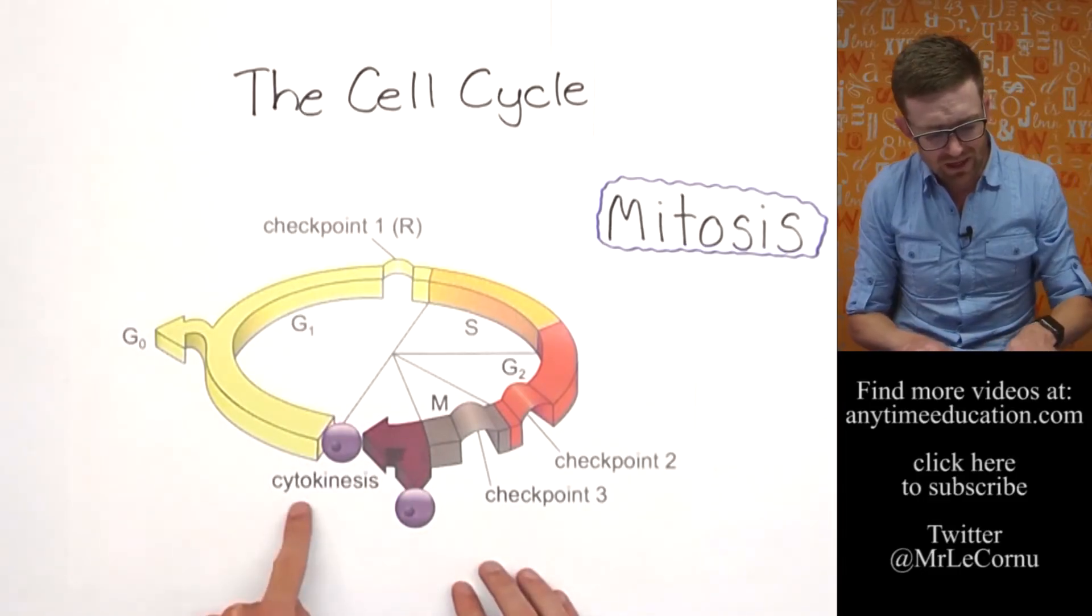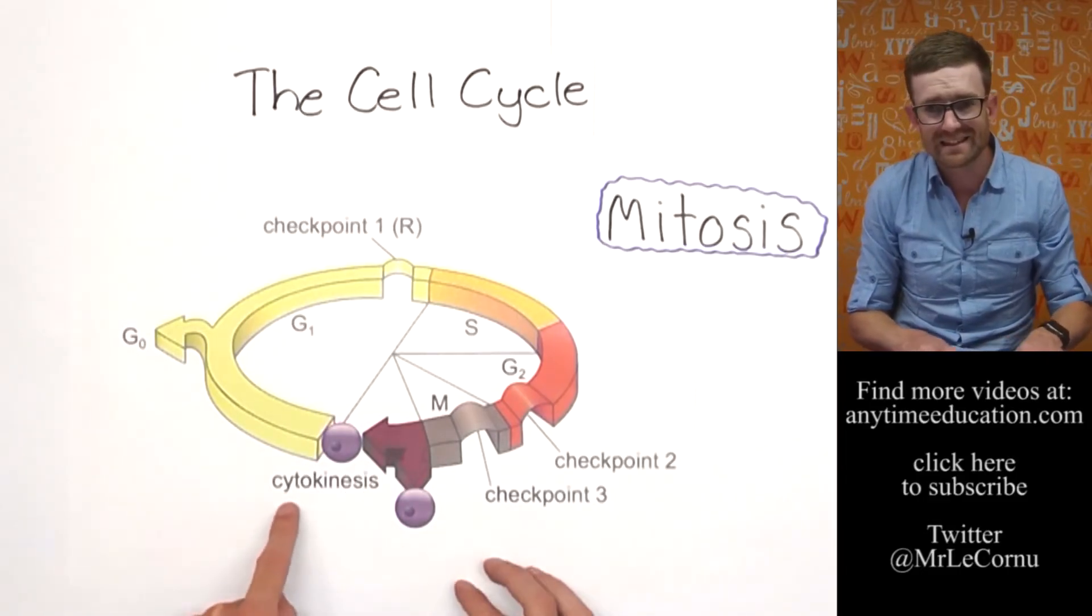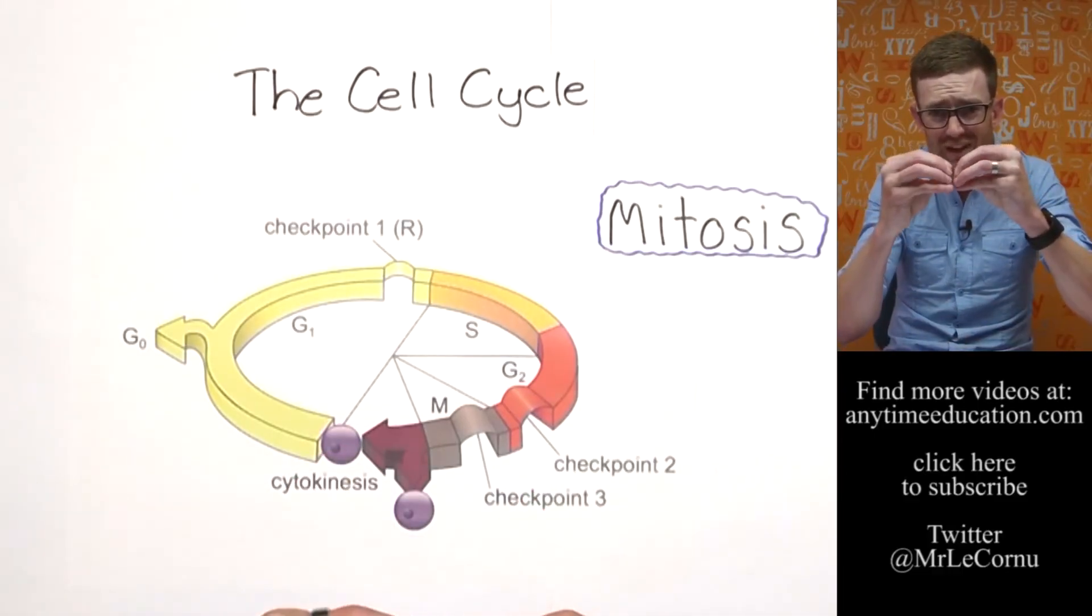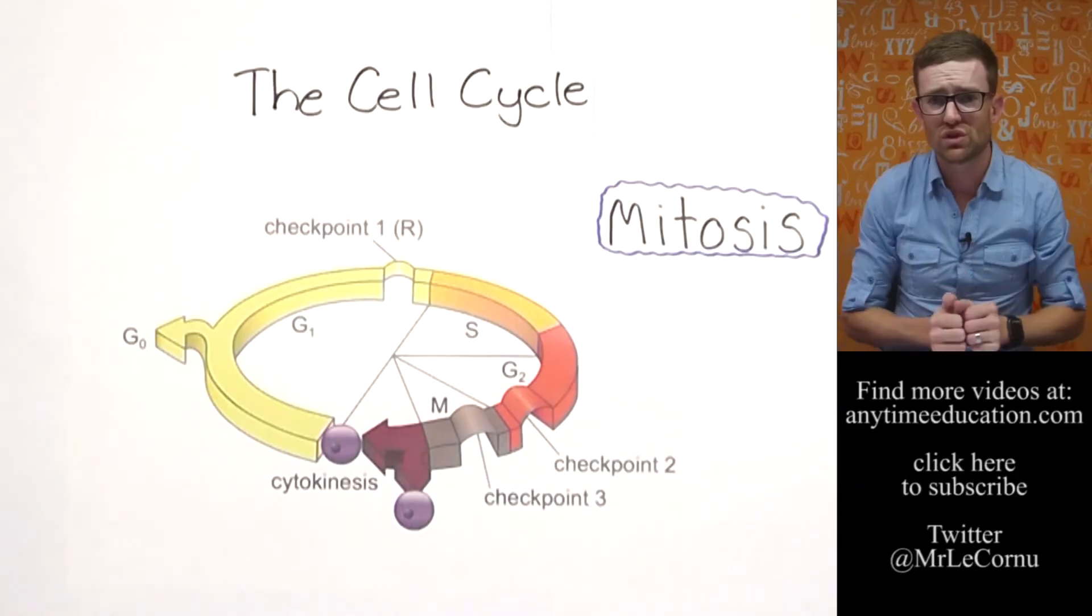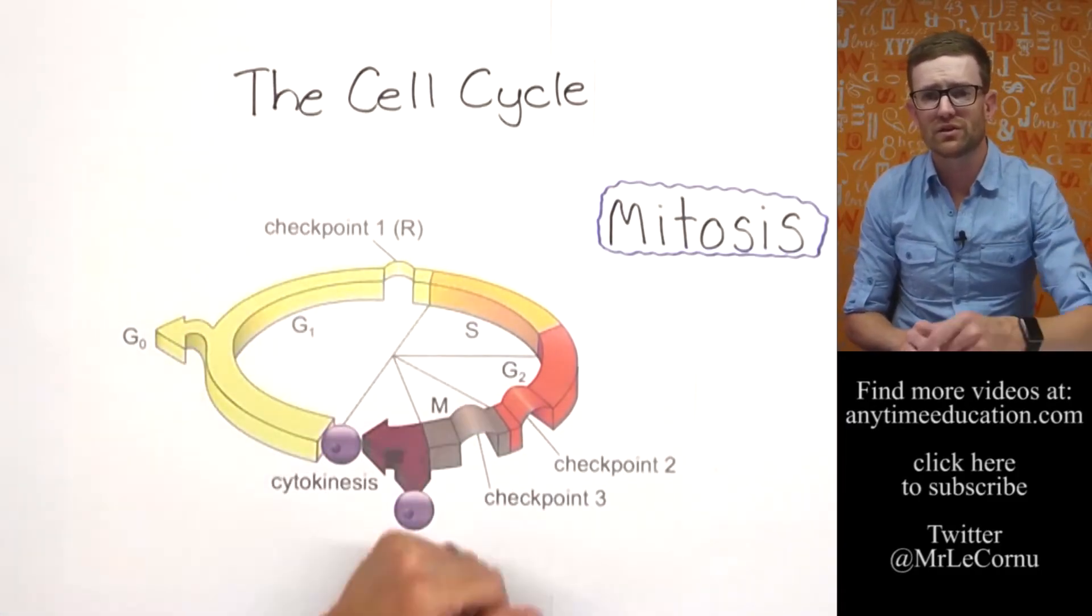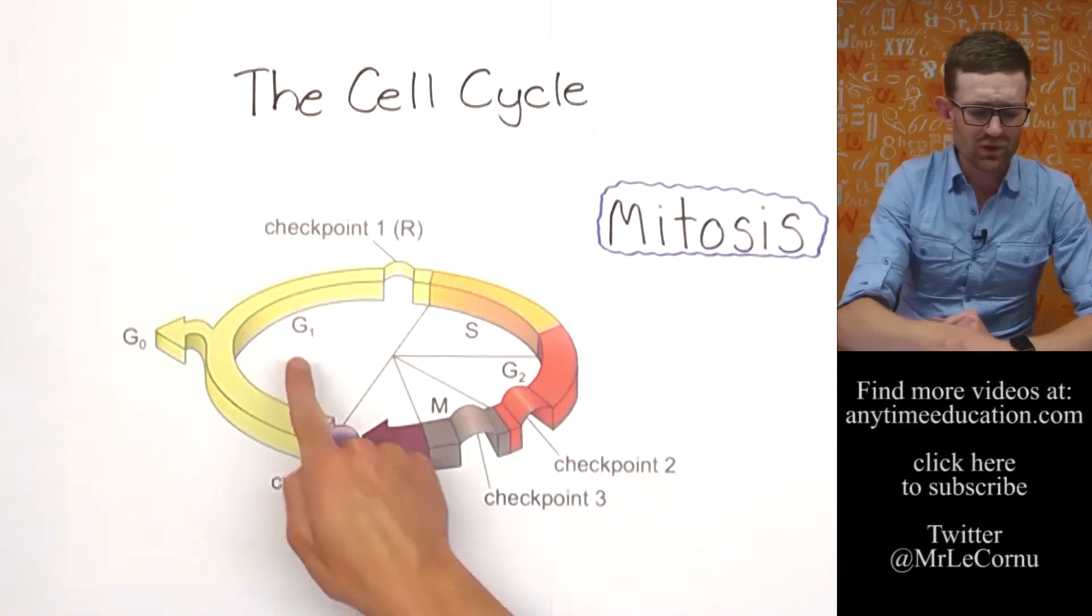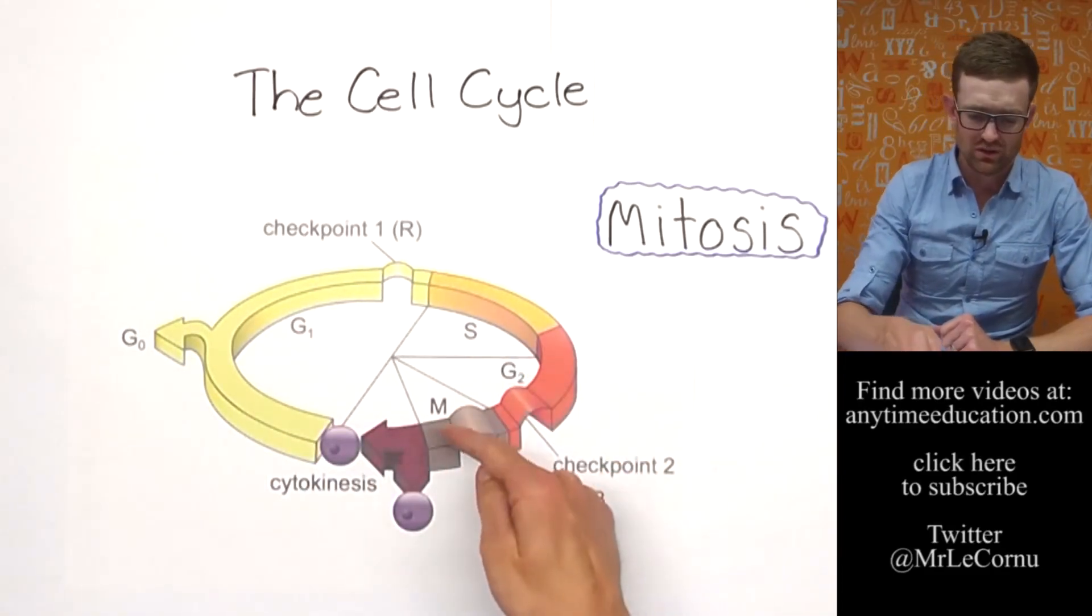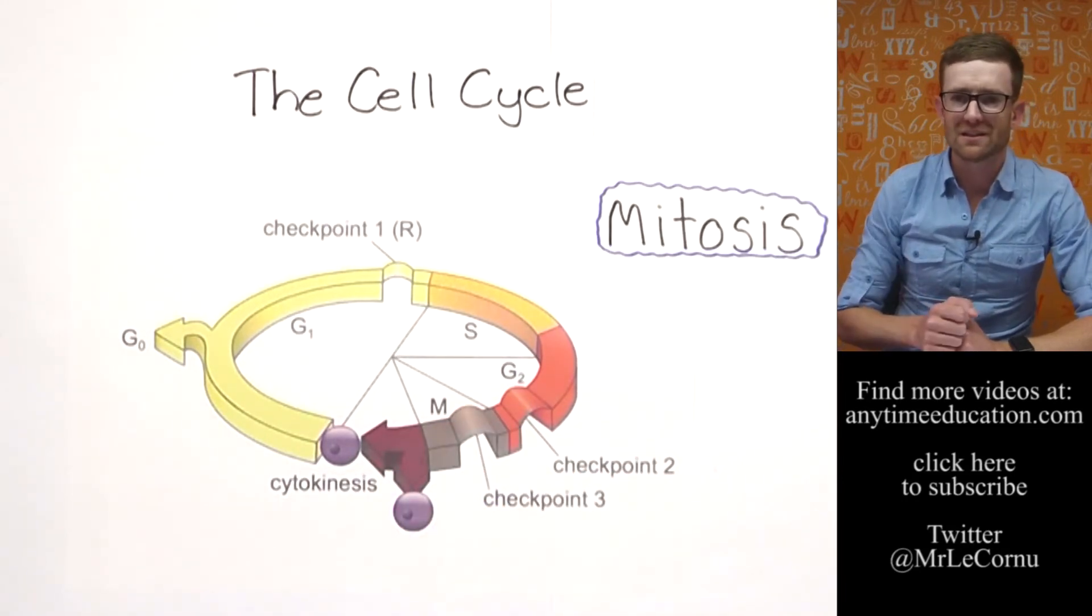And then finally, just after mitosis finishes, we have cytokinesis. Cytokinesis is the part where the cell actually pinches itself and cleaves into two new cells. Then the whole process starts all over again. So that's all we've got: G1, S, G2, M, and then cytokinesis.